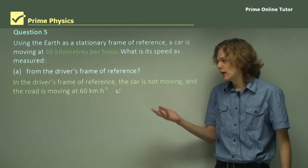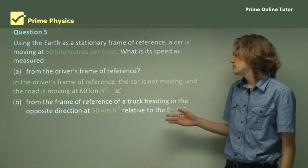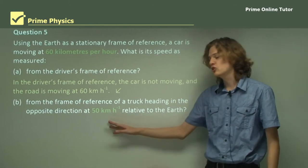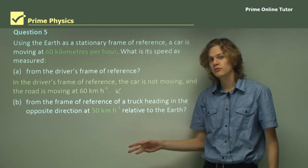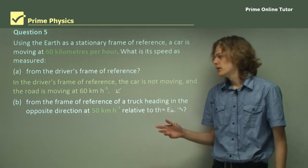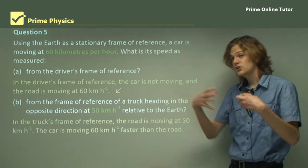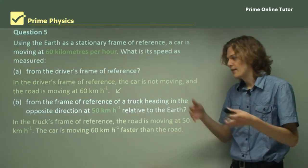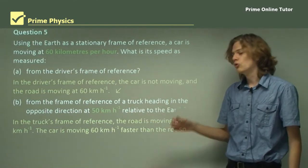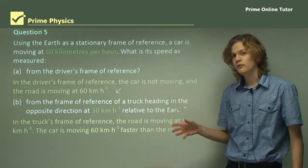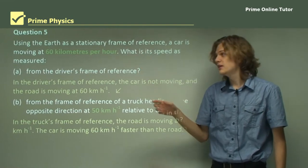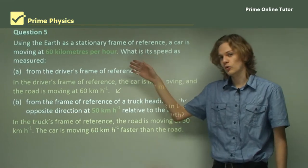What about from the frame of reference of a truck heading the opposite direction at 50 kilometers per hour relative to the Earth? The truck will be able to tell that the difference between his speed and the road speed is 50 kilometers per hour, and he'll also be able to tell that the difference between this driver's speed and the road speed is 60 kilometers per hour.